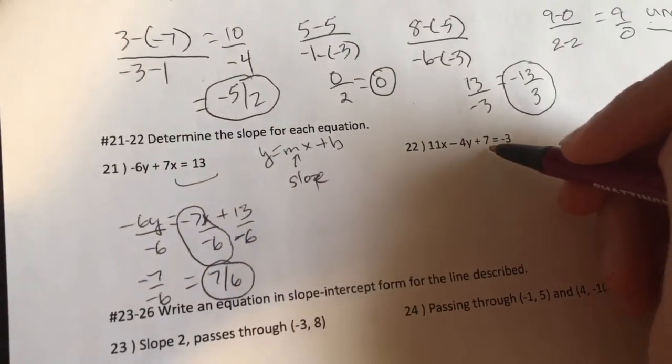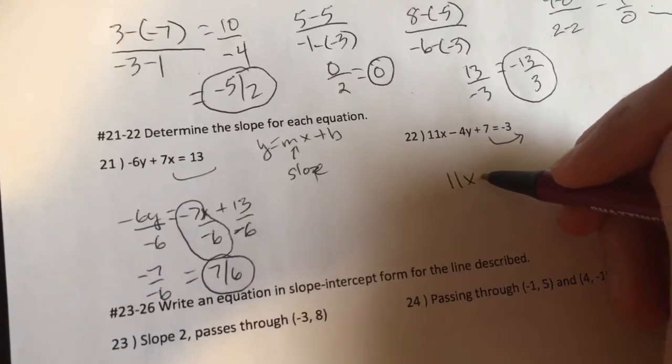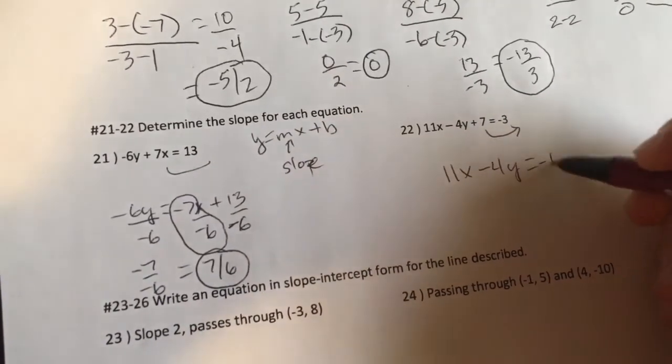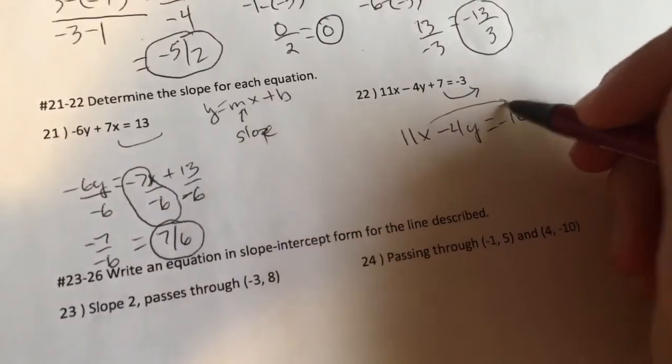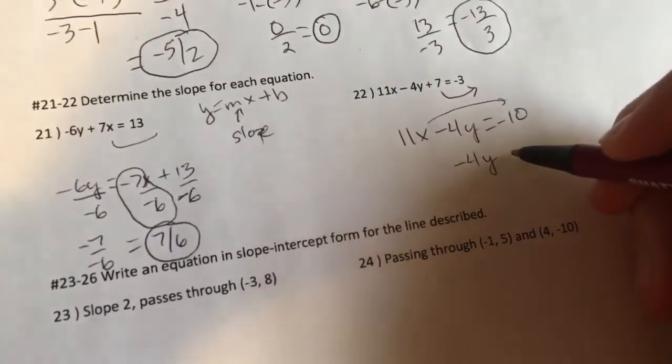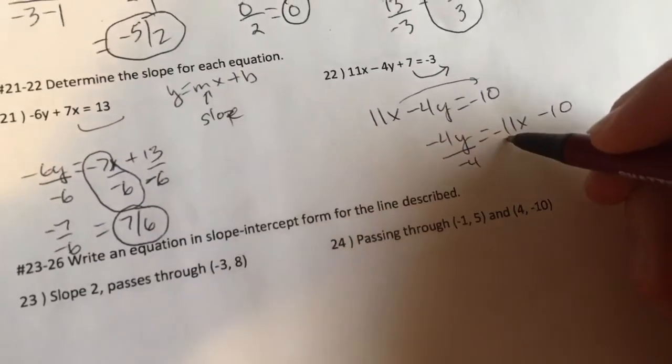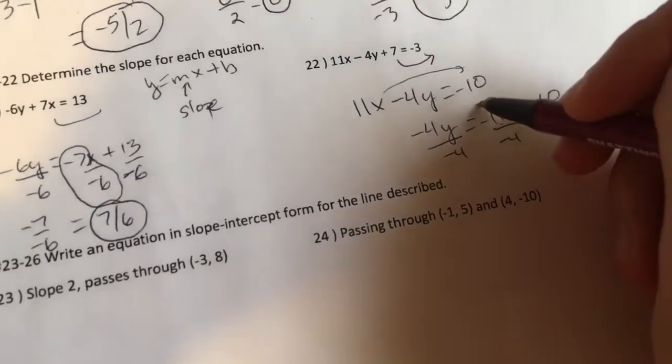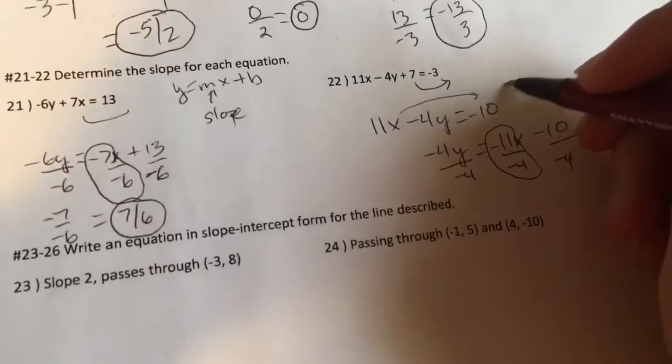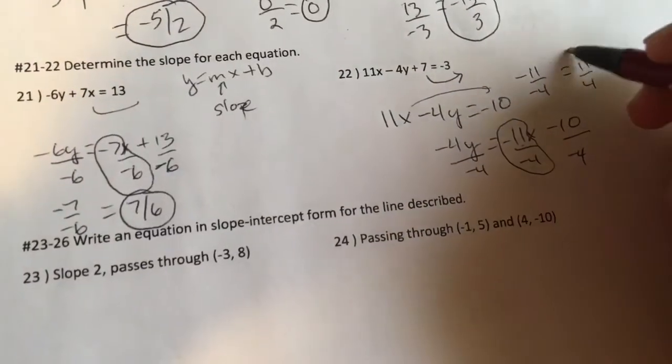All right. This one, I'll do the same thing. I'll just subtract. That's 11X minus 4Y is a negative 10. Again, I'm going to move the 11X over negative 4Y is equal to a negative 11X minus 10. Divide by what's attached to Y always. Again, I care about this ratio, negative 11 over negative 4. Negative 11 over negative 4 is a positive 11 over positive 4, which is my slope. All right, folks, the last few are writing equations in slope-intercept form.